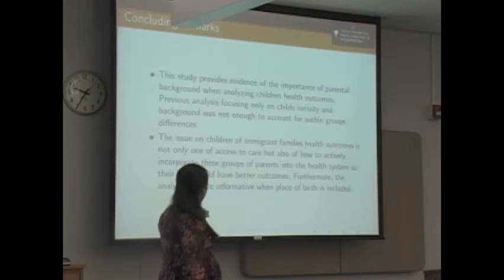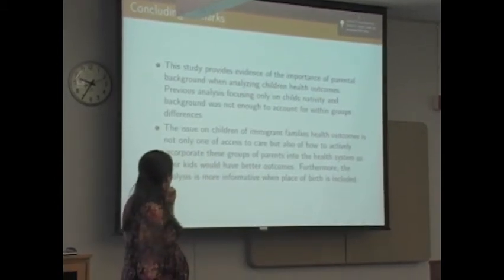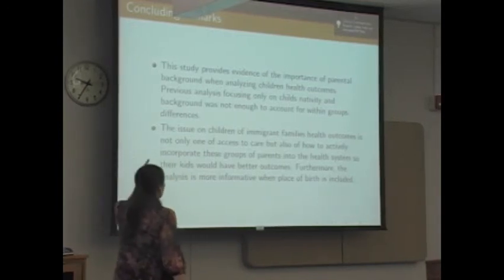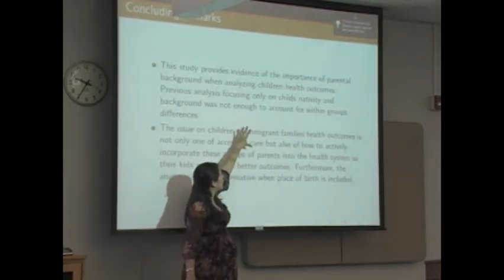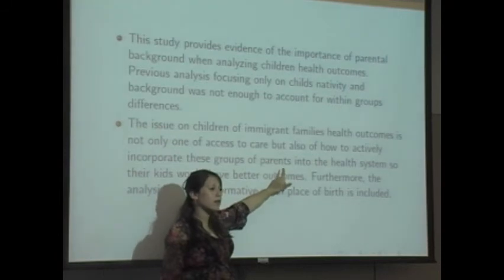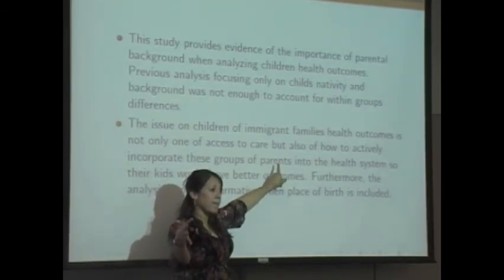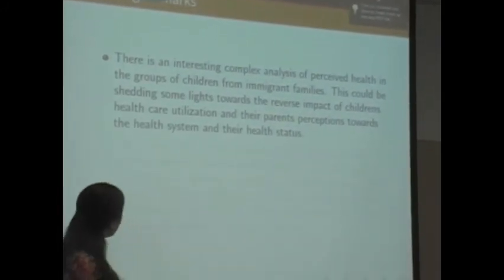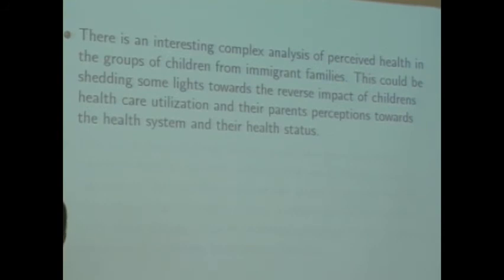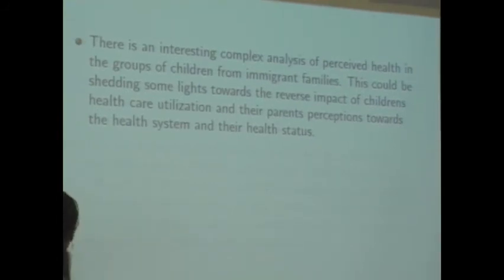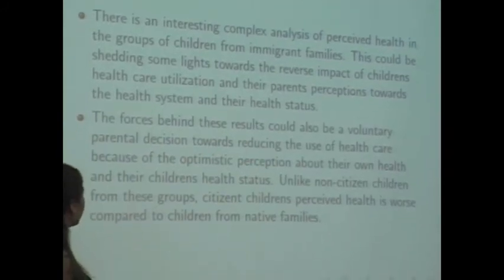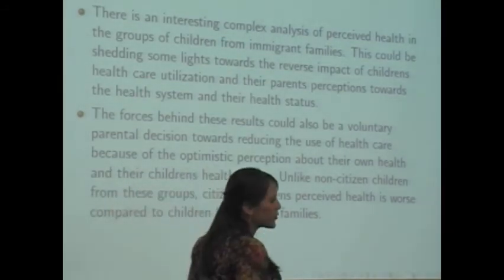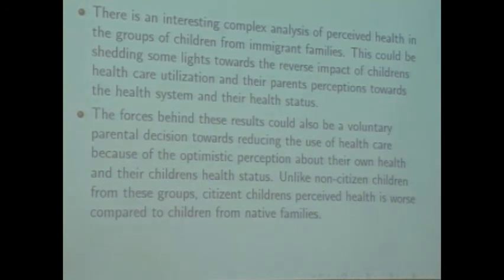The issue of children of immigrant families' health outcomes and access to health is not going to be only about access to health, but also how we incorporate these groups and their parents. The focus is not going to be only on the children, but how the parents are going to be incorporated in changes to the healthcare system — because if the parents are incorporated, more likely the children will be too. There is a complex relationship between perceived health and the actual use of healthcare. The forces behind this could be voluntary parental decisions reducing the use of healthcare and the use of alternative medicine.